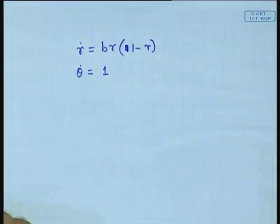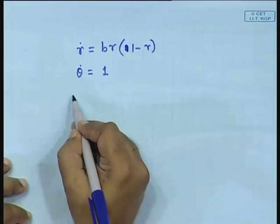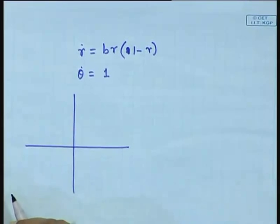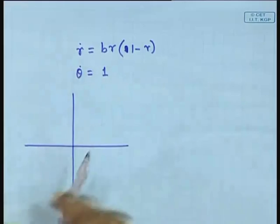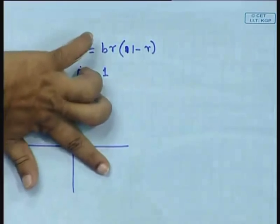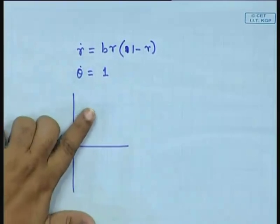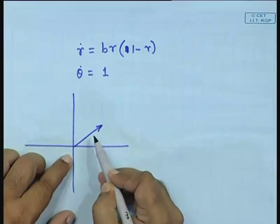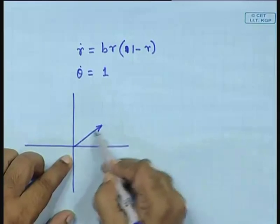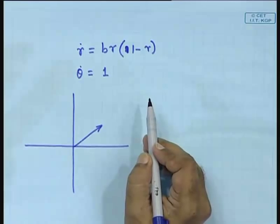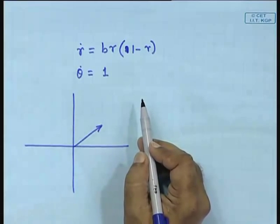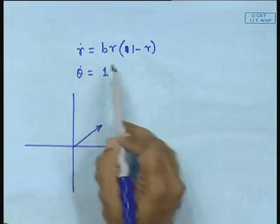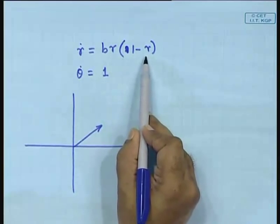Consider the set of differential equations: Ṙ = bR(1 − R) and θ̇ = 1. Here θ and R describe the radius vector and angle. θ̇ = 1 means the radius vector rotates at uniform speed — 1 radian per second. Ṙ describes how the radius changes. Setting Ṙ = 0 gives R = 0 and R = 1.